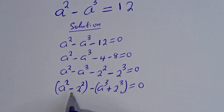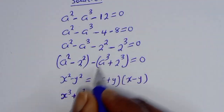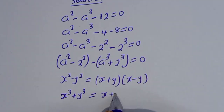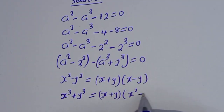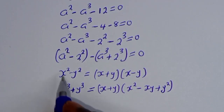Recall the identities: s squared minus y squared equals (s+y)(s-y), and s cubed plus y cubed equals (s+y)(s squared minus sy plus y squared). We will apply these to factor each group.